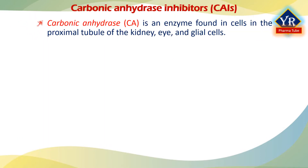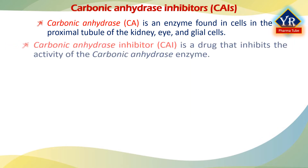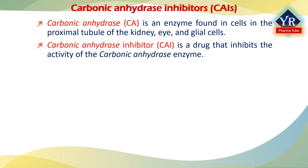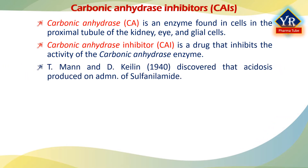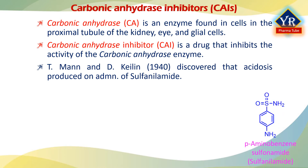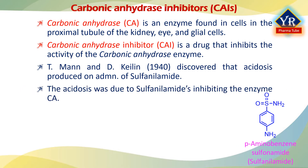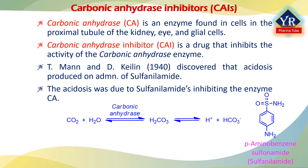Carbonic anhydrase is an enzyme found in cells in the proximal tubule of the kidney, the eye, and glial cells. A carbonic anhydrase inhibitor is a drug that inhibits the activity of the carbonic anhydrase enzyme. In 1940, T. Mann and D. Keeling discovered that acidosis was produced on the administration of sulfonamide drug. Acidosis is a condition in which pH in the blood drops below the normal pH of 7.35. This acidosis was due to the inhibition of carbonic anhydrase enzyme by the sulfonamide drug. The carbonic anhydrase enzyme is responsible for the conversion of carbon dioxide and water to hydrogen ion and bicarbonate ion.